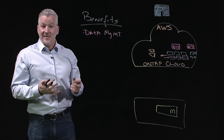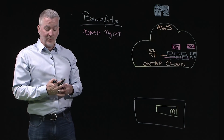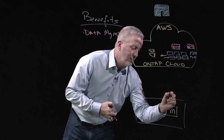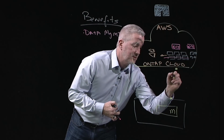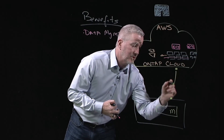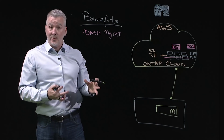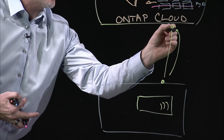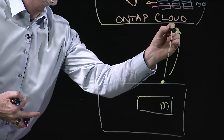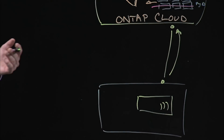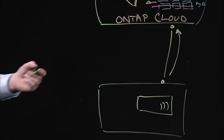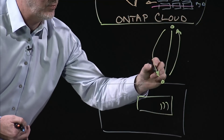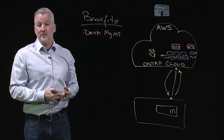We also have instant data replication capabilities. If you have a connection between your on-premises data center and the public cloud, you can use Cloud Manager to quickly and easily click and drag your data and push it up to the cloud. Conversely, if you want to move your data back, you can also do a SnapMirror back on-prem — just depends on what your needs are.